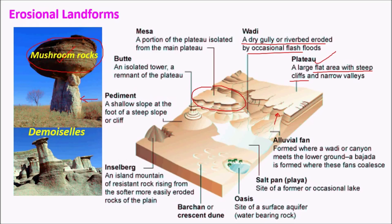A Butte is a much smaller version of a Mesa, giving rise to a dome-like structure. An Inselberg is a resistant rock that stands tall and undergoes differential erosion, remaining prominent over a long period compared to surrounding structures. A Pediment is simply the deposition of all debris eroded by wind and water, which settles just below structures like plateaus, Mesas, or Buttes.